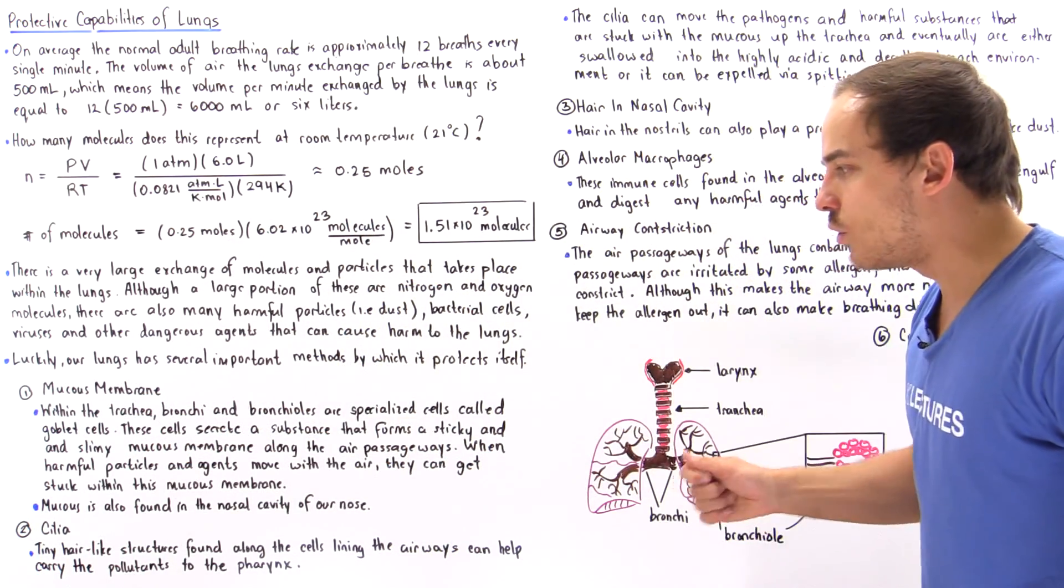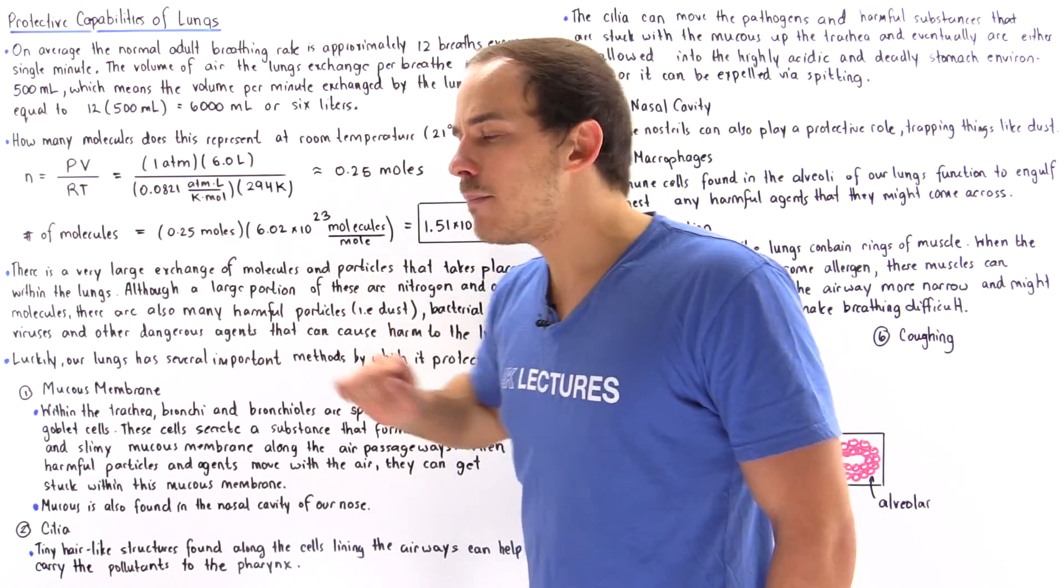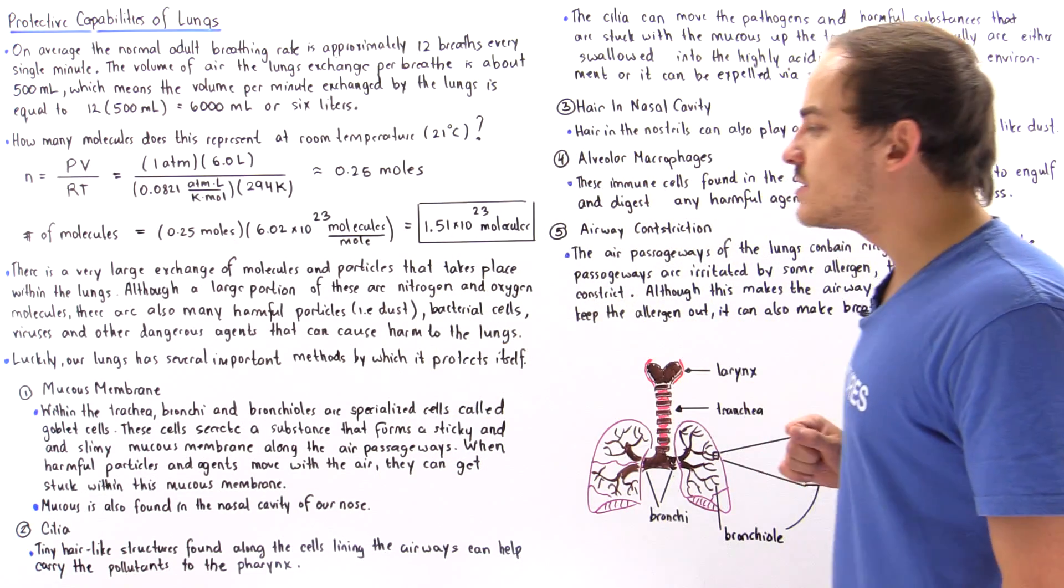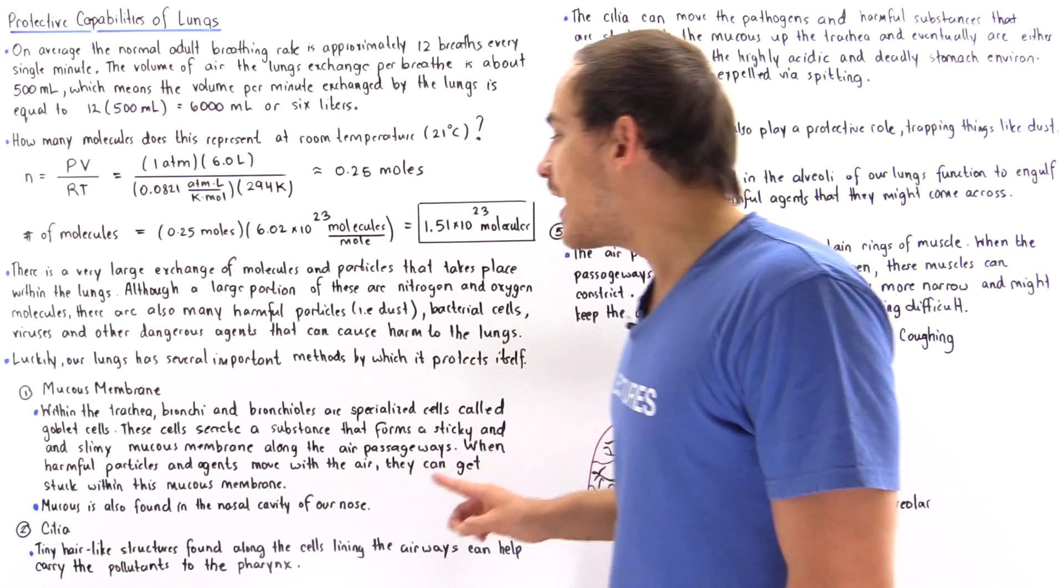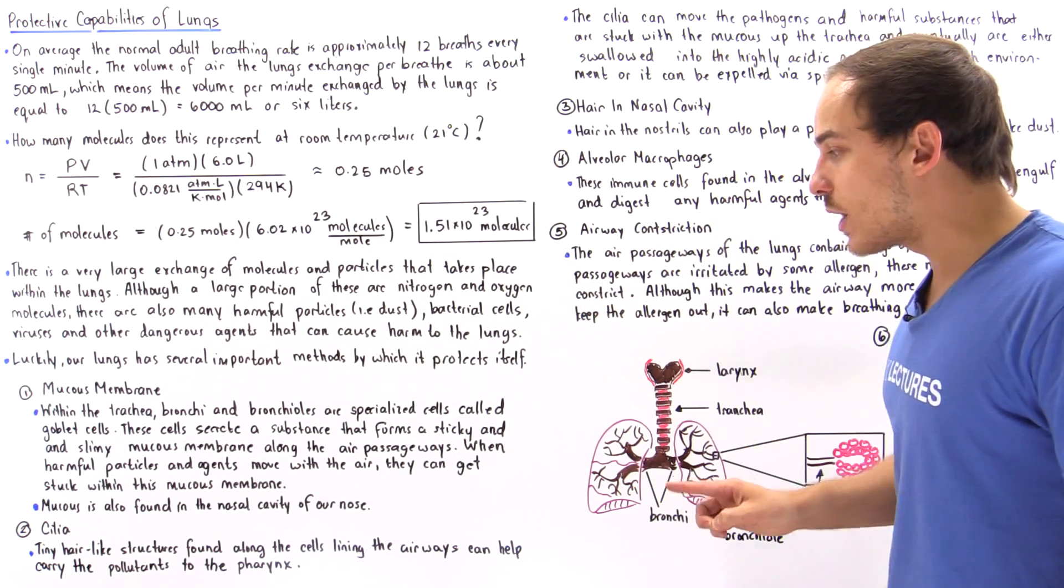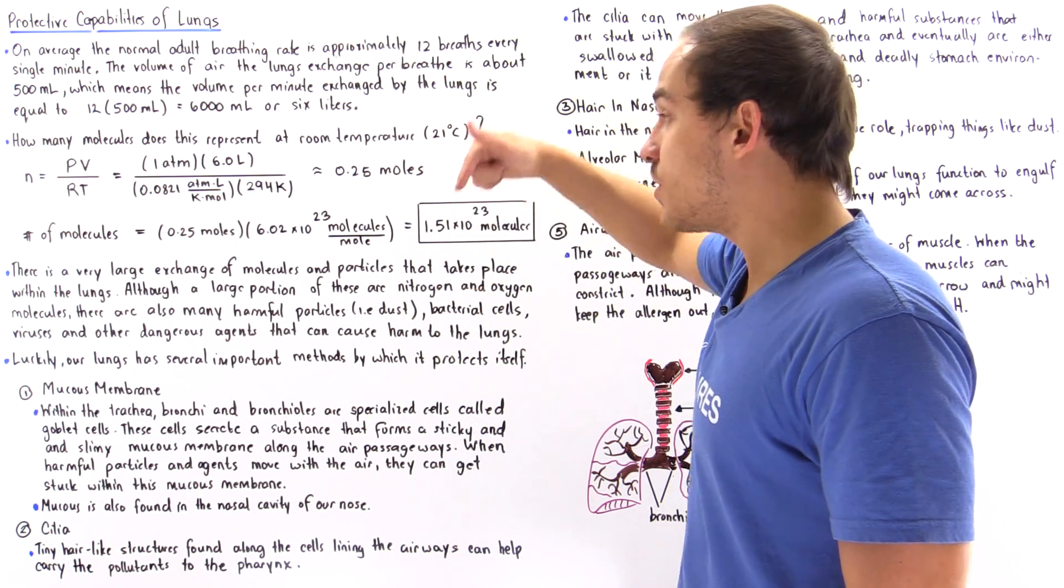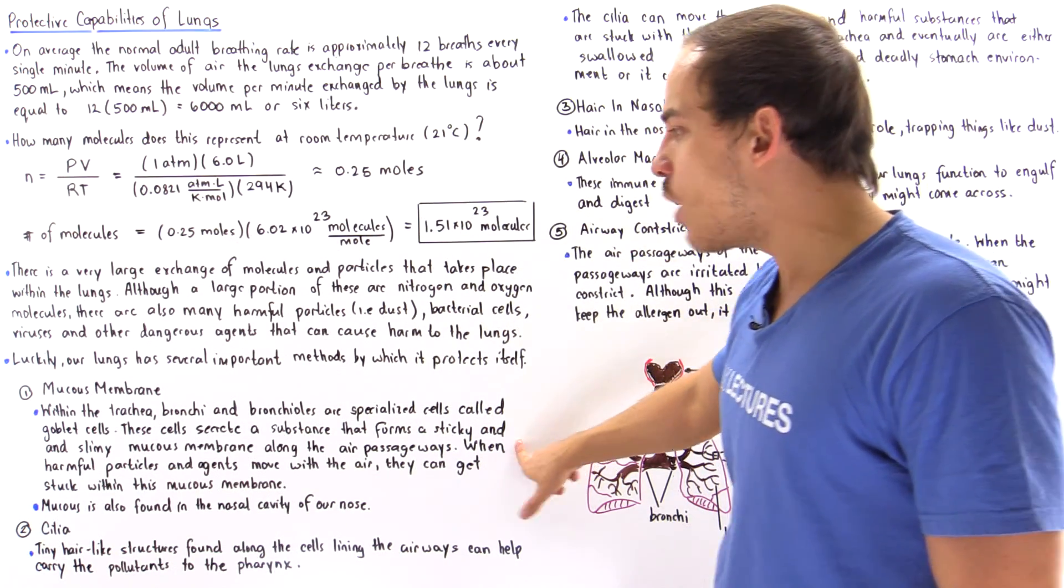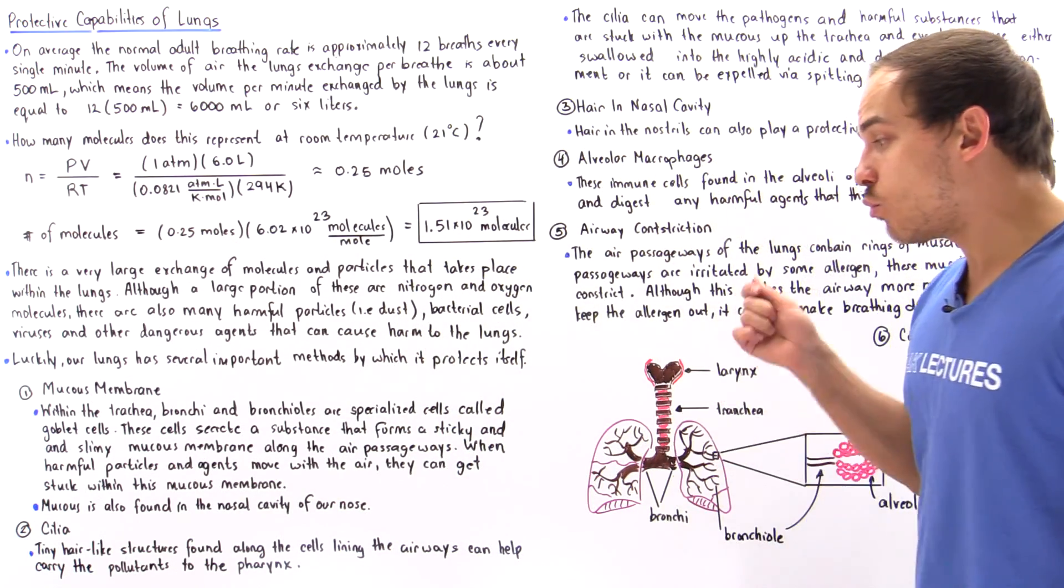Once again, mucous membrane within the trachea, the bronchi, and the bronchioles, as well as within our nasal cavity—we have specialized cells called goblet cells. These cells can create a secreted substance that forms a very sticky and slimy mucous membrane along the passageways within which our air actually moves.